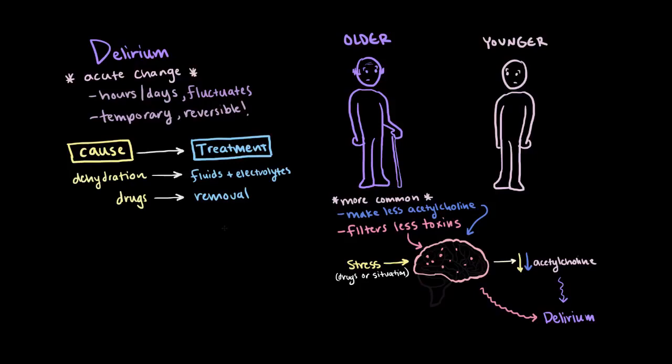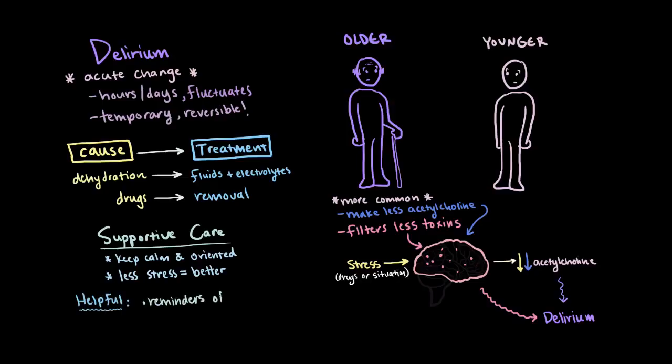Oftentimes, it's important to provide supportive care for the patient if they're susceptible to cases of delirium or during their recovery from delirium. Keeping patients calm and oriented with their surroundings is very important. The less stressful, the better. Things that are helpful are things like regular verbal reminders of their location and what's going on, involvement of family members, use of relaxation techniques, and making sure that they're given proper nutrients and fluids.